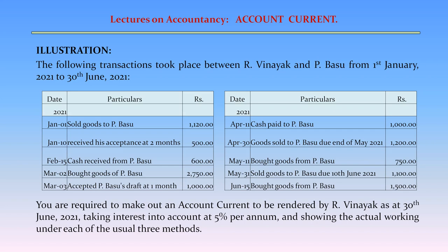May 11: Bought goods from P. Basu – Rs. 750. May 31: Sold goods to P. Basu, due 10th June 2021 – Rs. 1,100. June 15: Bought goods from P. Basu – Rs. 1,500. You are required to make out an account current to be rendered by R. Vinayak as at 30th June 2021, taking interest into account at 5% per annum and showing the actual working under each of the usual three methods.